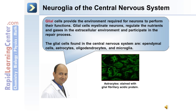Glial cells provide the environment required for neurons to perform their functions. Glial cells perform functions such as myelinating neurons, regulating the nutrients and gases in the extracellular environment, and participating in the repair process. The glial cells found in the central nervous system are ependymal cells, astrocytes, oligodendrocytes, and microglia.